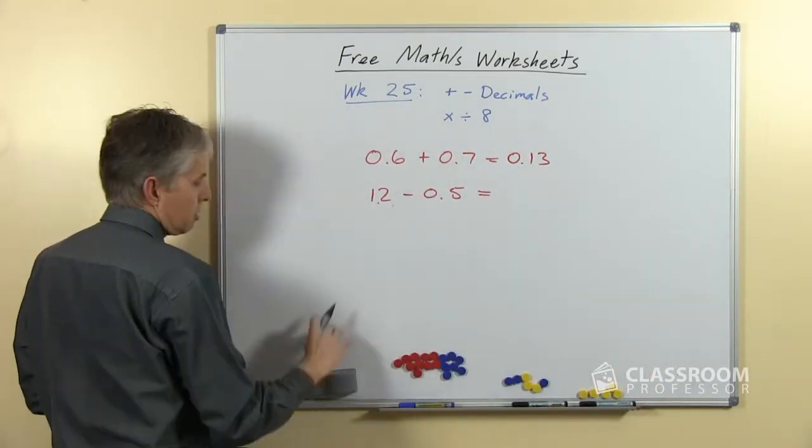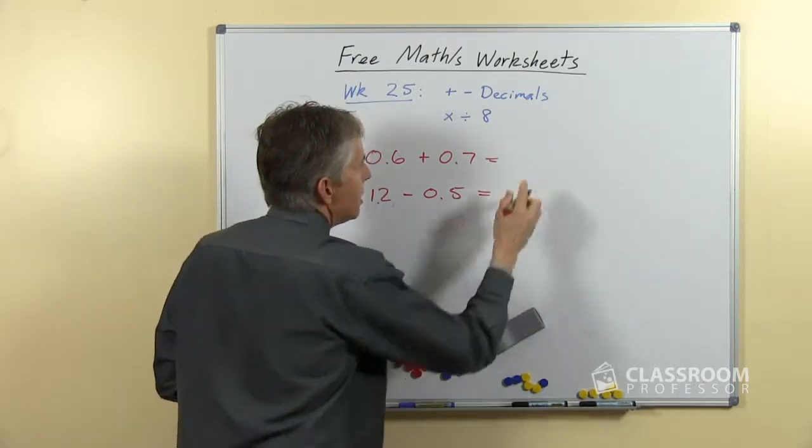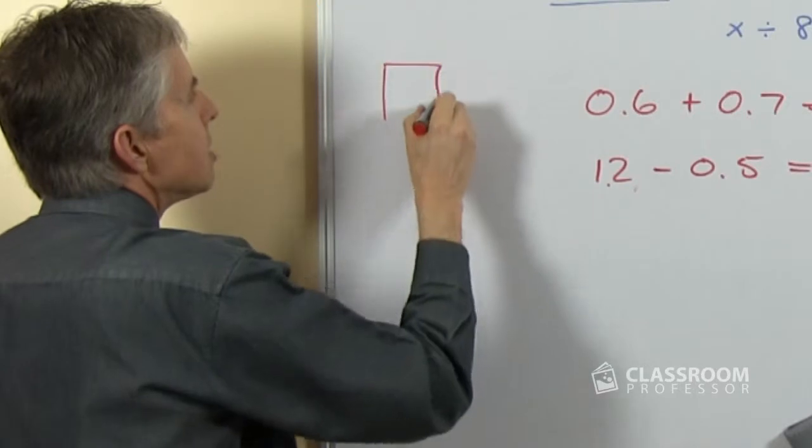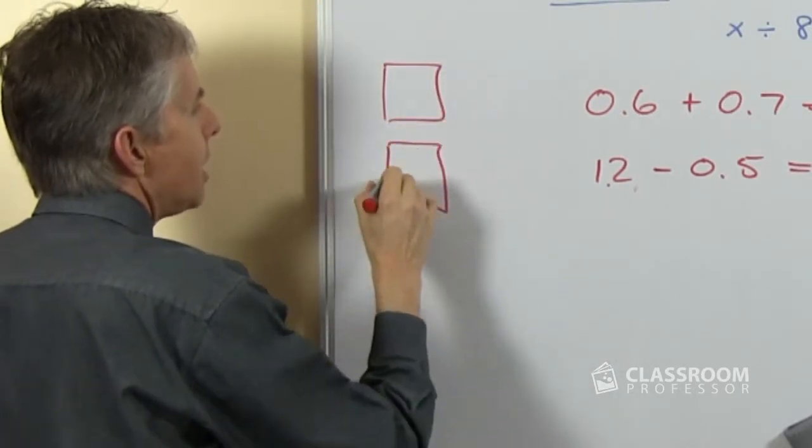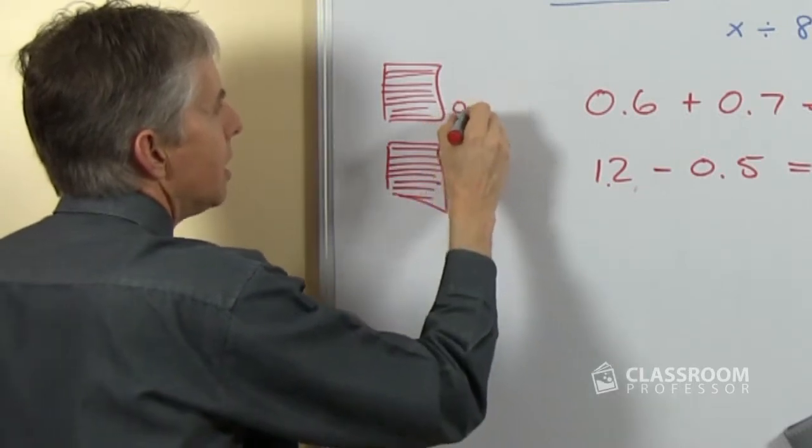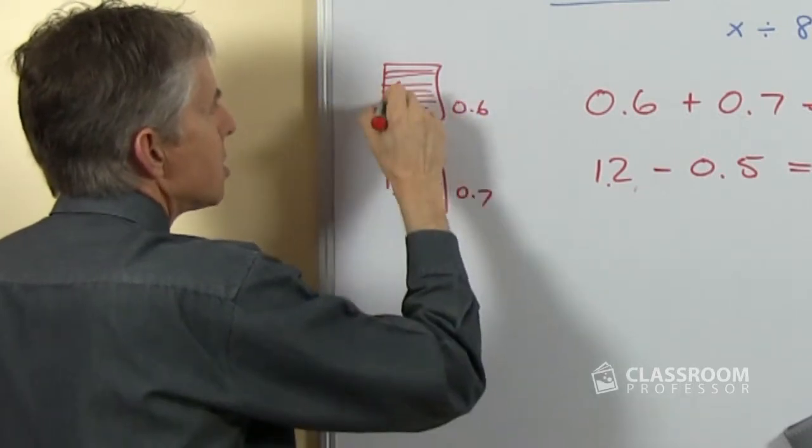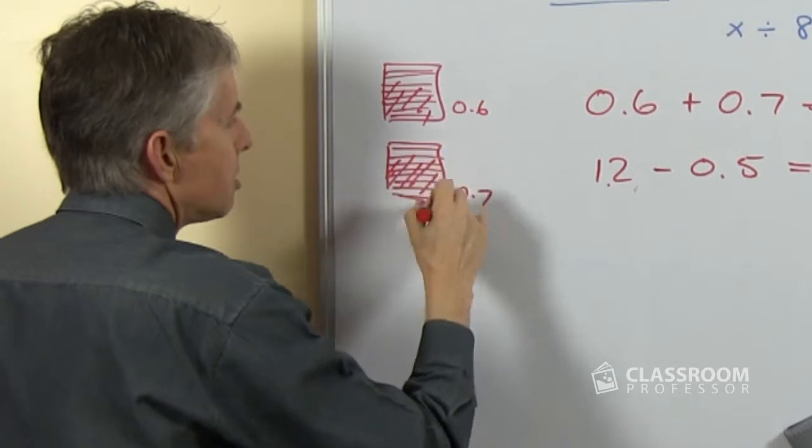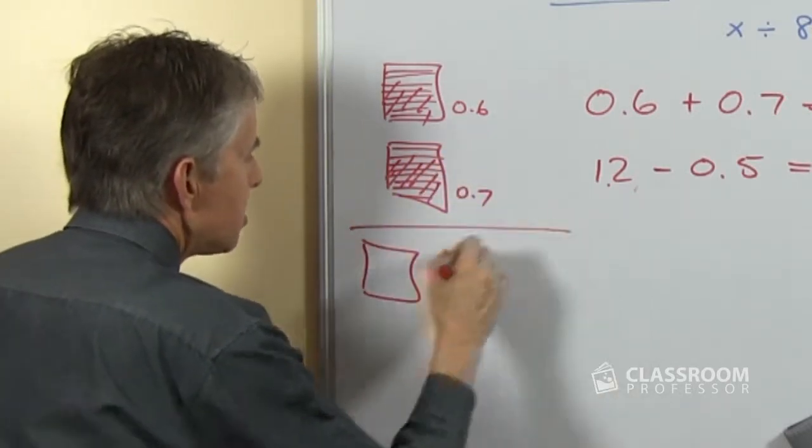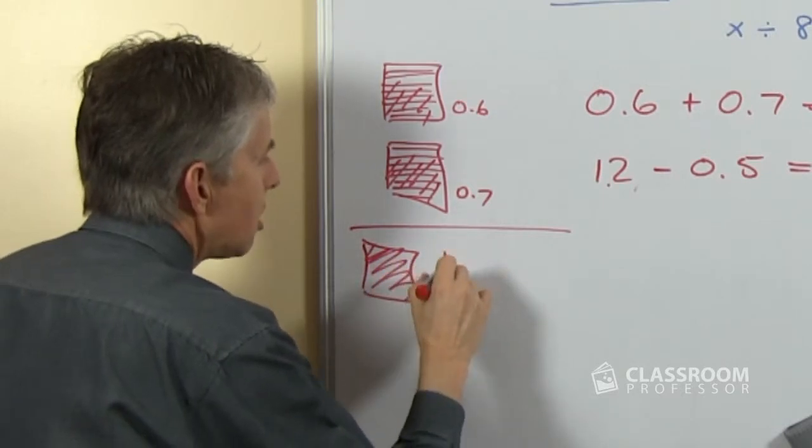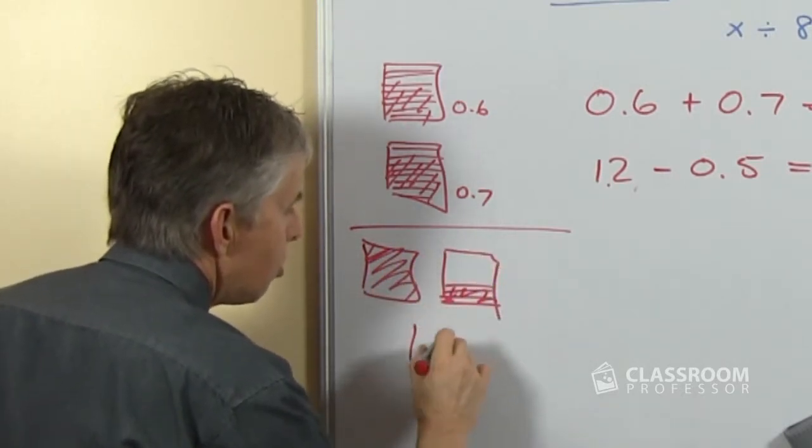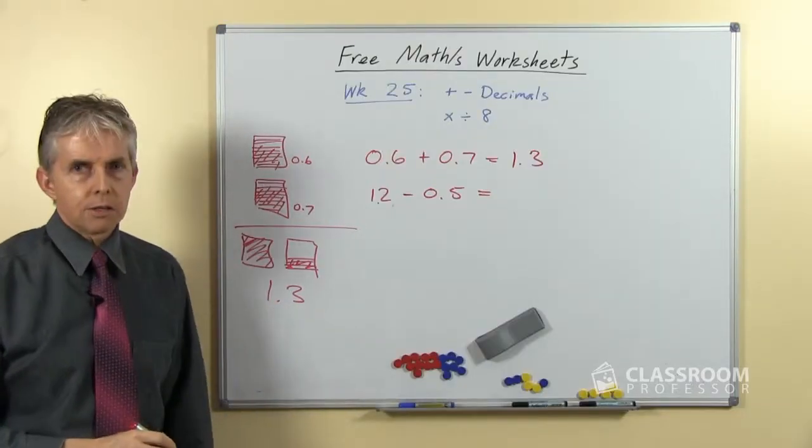Now you could, I should put the correct answer up here in case this becomes the thumbnail on YouTube. So if we're adding, we could quickly draw some diagrams or have this ready on PowerPoint or something and have 0.6, 0.7 so we'll shade that in. I'm doing this too quickly. We can see that the result of this, if we add that together will be an entire whole plus 3 more making 1 whole and 3 tenths.